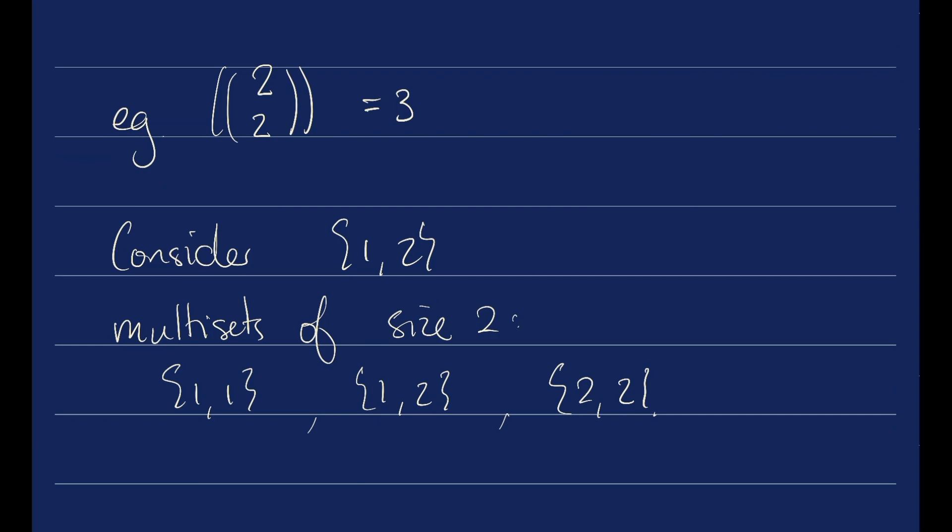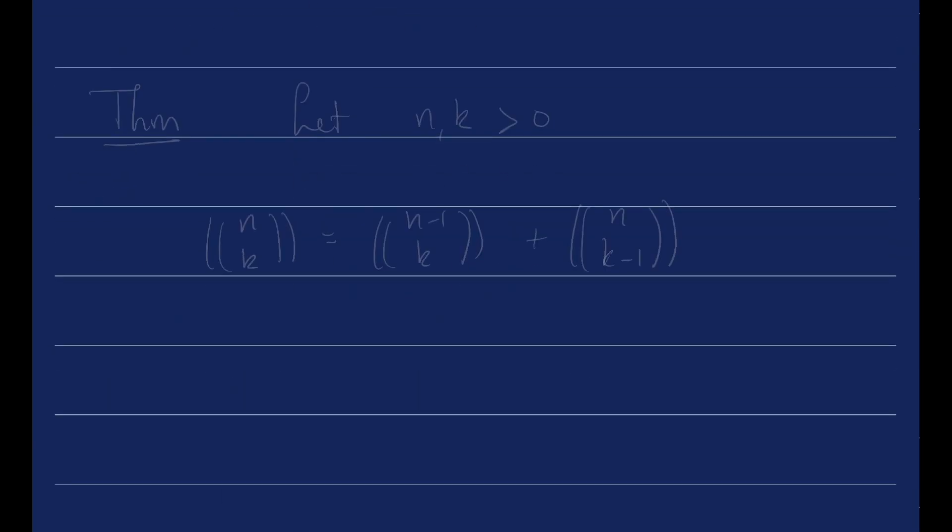Much like with binomial coefficients, we want to establish various formulae to help us count the multi-sets that we have. So here's the theorem. Let n and k be positive natural numbers. We claim that n multi-choose k is equal to n minus 1 multi-choose k plus n multi-choose k minus 1.